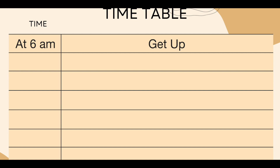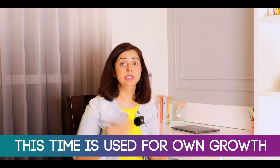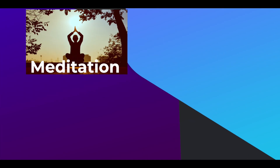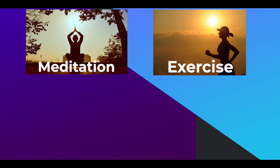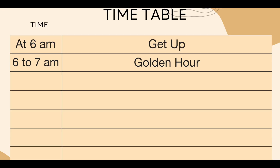Let's move on to the third part of the video — the timetable. We will get up at 6am in the morning. 6am to 7am is the time I call the golden hour. We will use this time in the most productive way — for growth, for meditation, exercise, positive affirmation, prayer, anything on which you feel contributes to your personal growth. Invest this first hour of your day in that thing.